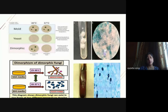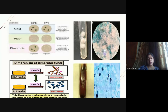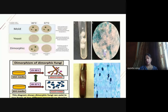In summary, fungi have two morphological forms—filamentous and yeast—dividing them into molds, yeasts, and dimorphic fungi, depending on the temperature of incubation. The traditional culture medium in mycology is Sabouraud's dextrose agar, known as SDA.